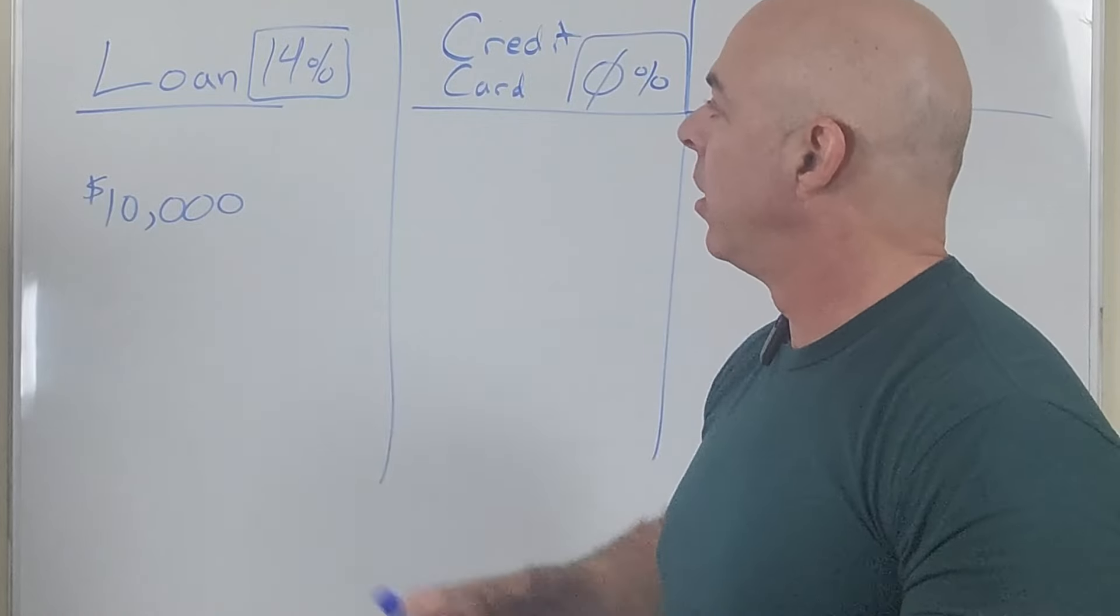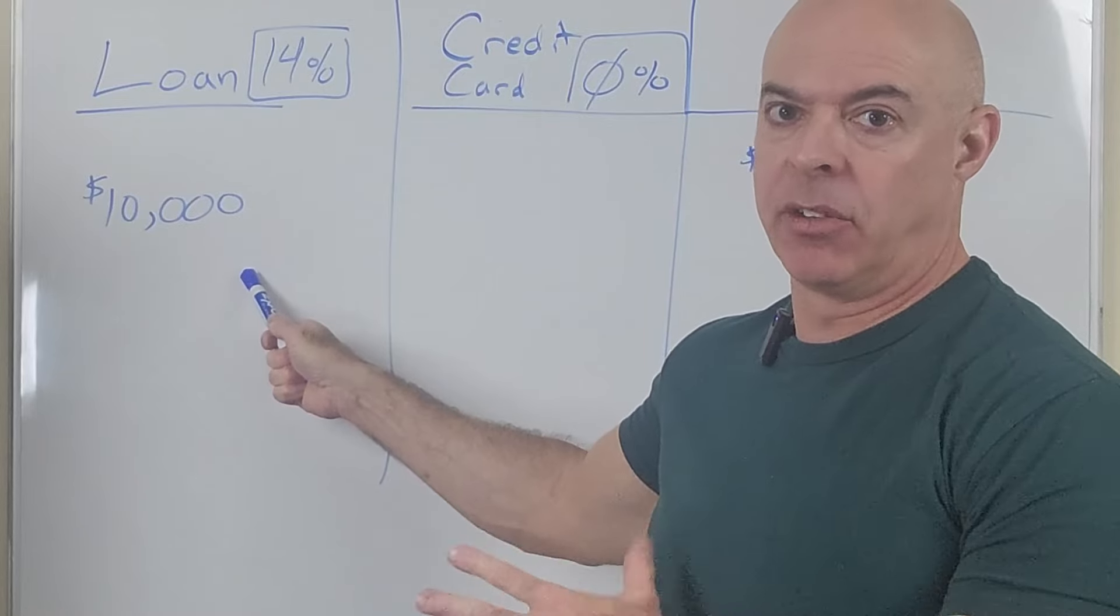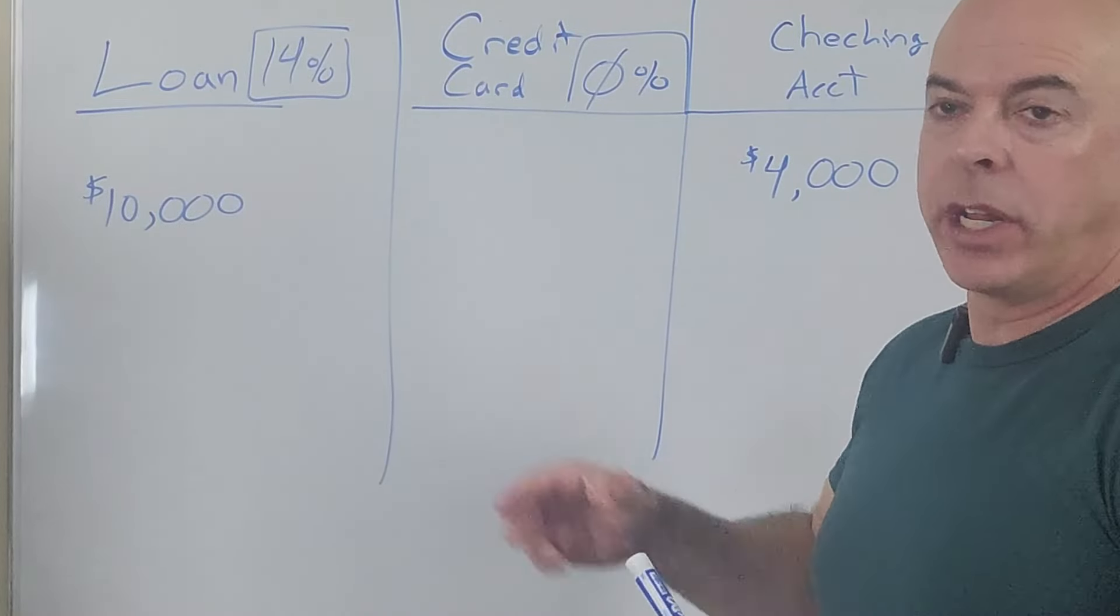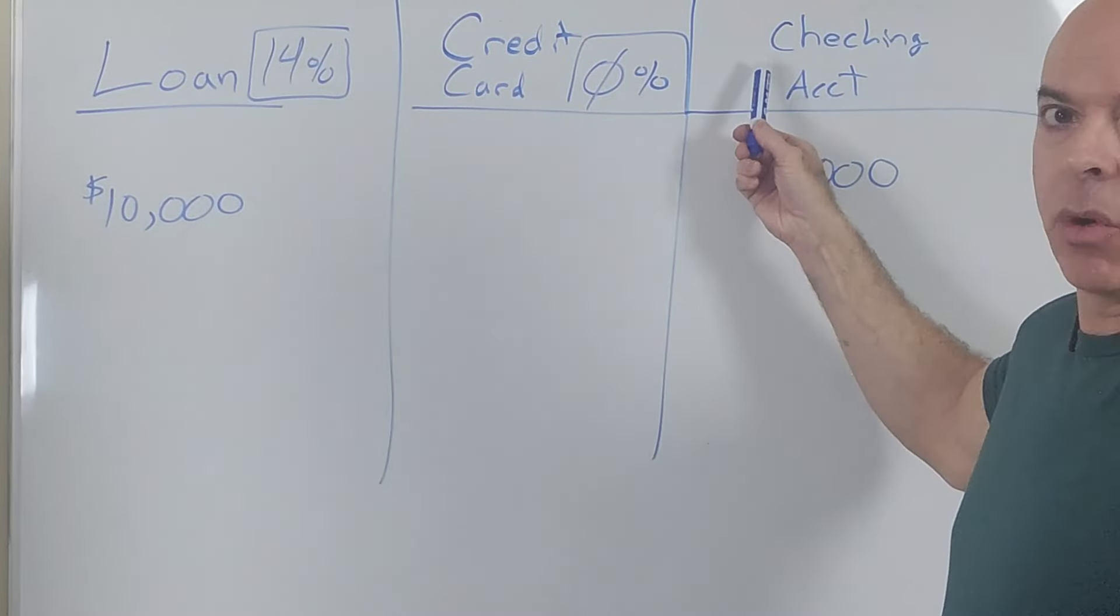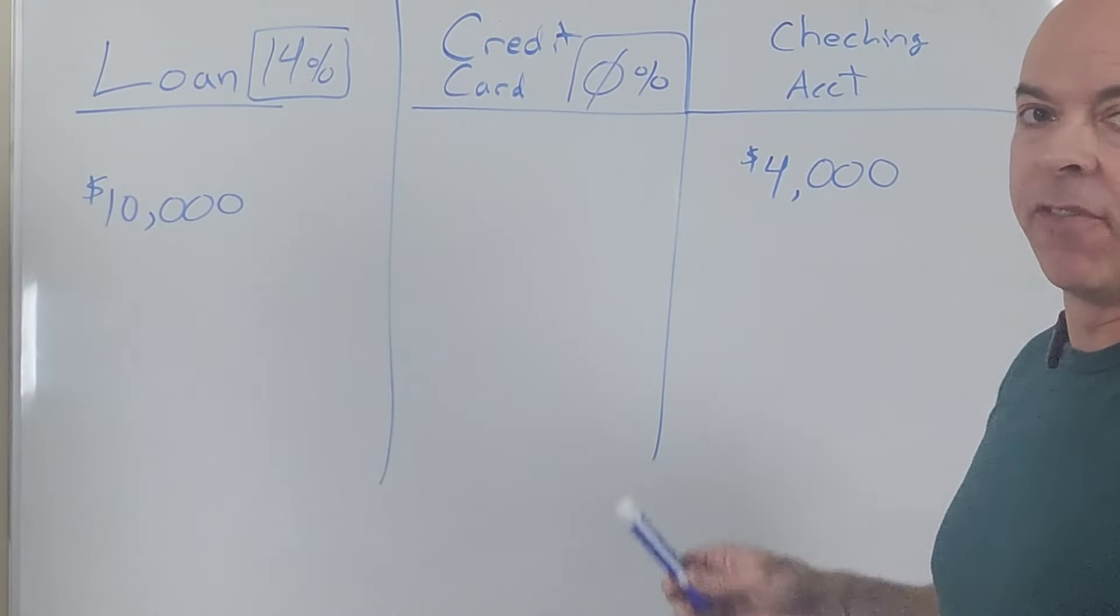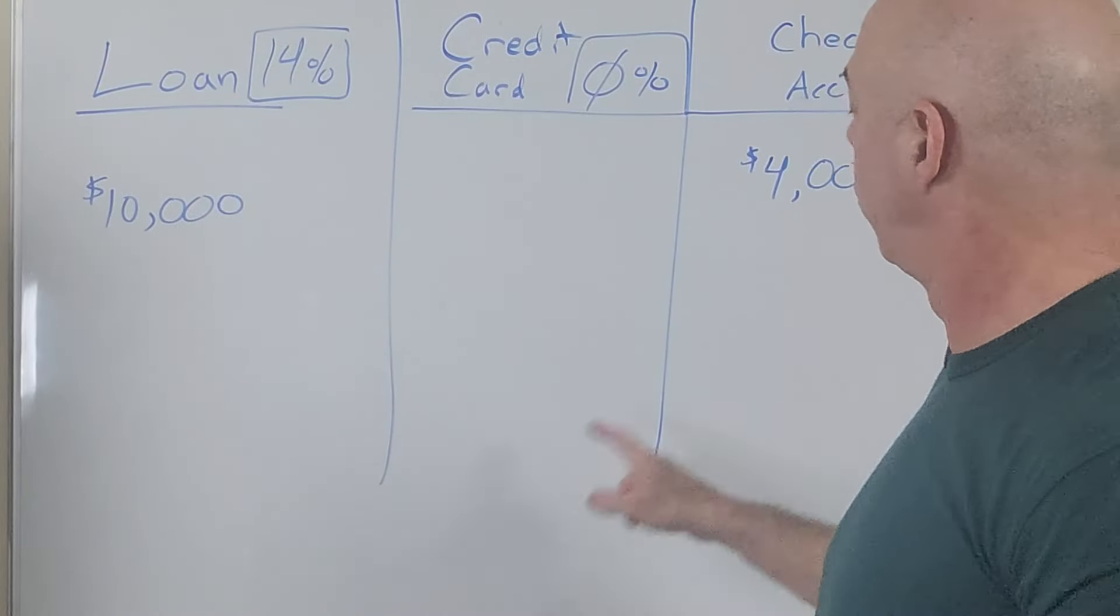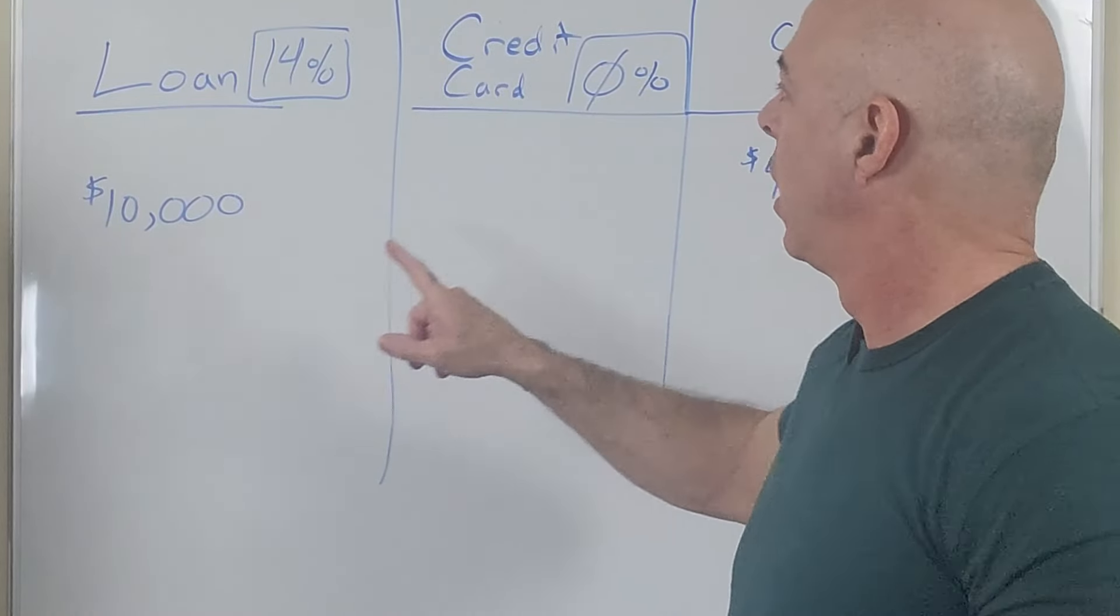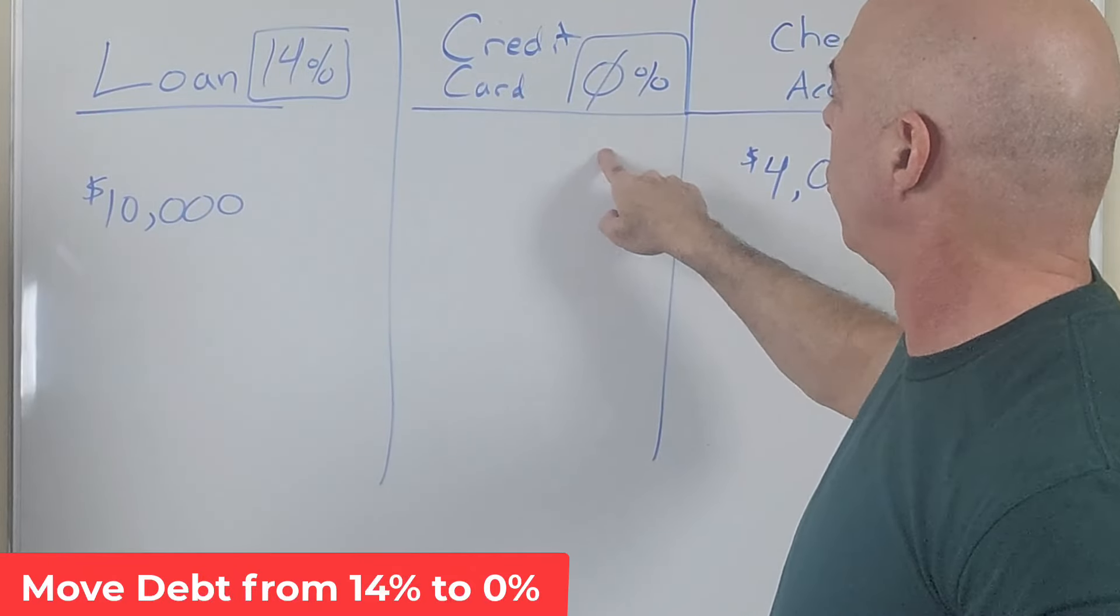Okay, so what I'm showing here on the board is your student loan at 14% and you have $10,000 balance. That's what you owe. Then you've gotten one of these credit cards and it's a 21 month credit card at 0%. And then you have your checking or your debit account. And let's say after taxes every month you make a total of $4,000 and you pay your expenses.